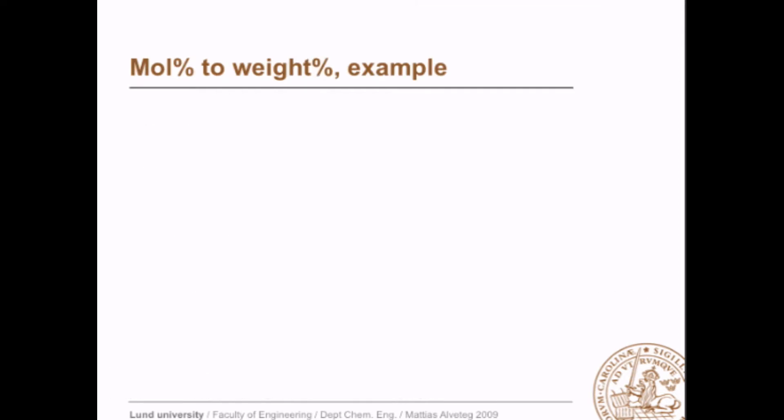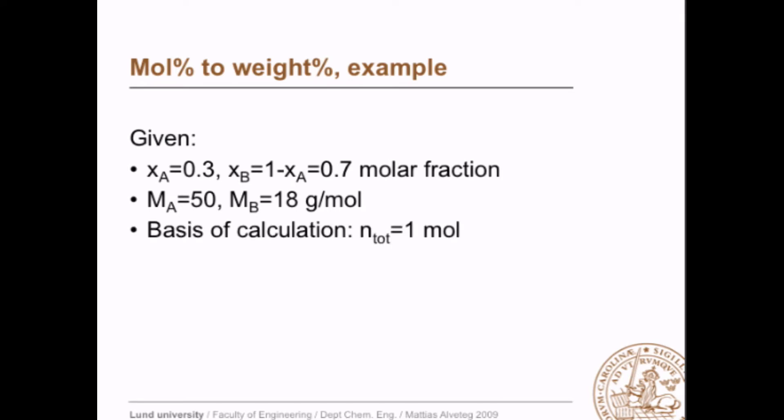Let's take the first example, mole percent to weight percent. The given are that we have 30 mole percent of A and 50 and 18 g per mole respectively. The easiest way to do this is probably to use a basis of calculation, and since we have the molar fraction given, let's use n_tot equals 1 mole as our basis of calculation because then we can easily calculate how many moles of A we have.